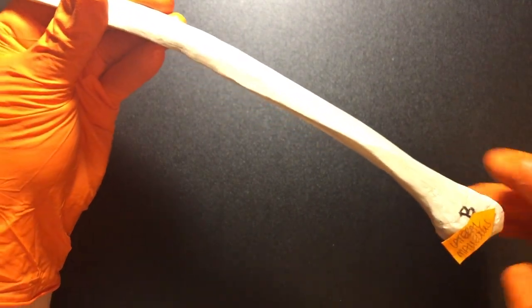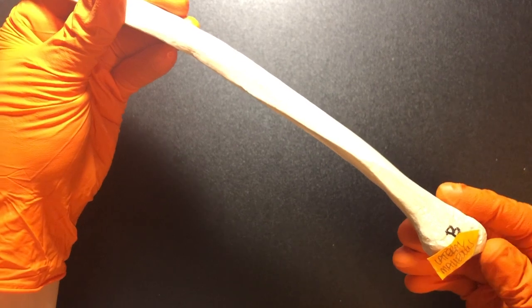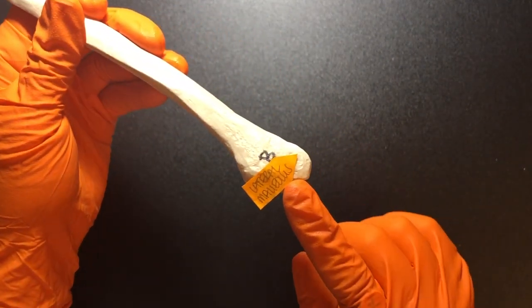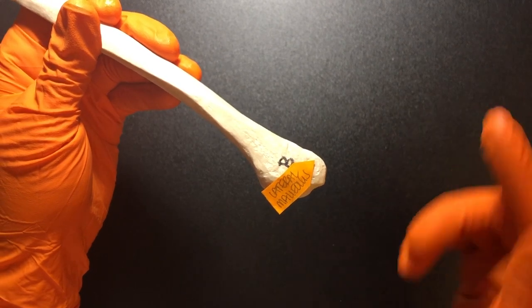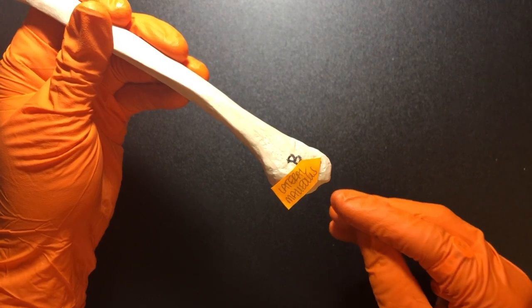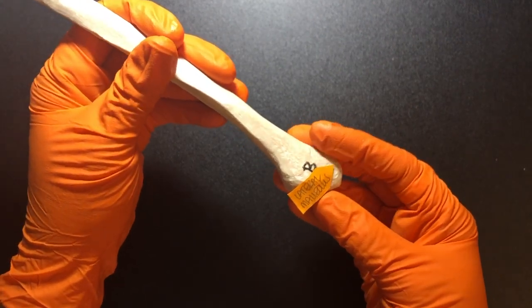And then the distal end is going to be kind of this triangular portion. This is actually the lateral malleolus. So whereas when we just looked at the tibia, which created the medial malleolus on the distal end of that tibia, the distal end of the fibula is the lateral malleolus.